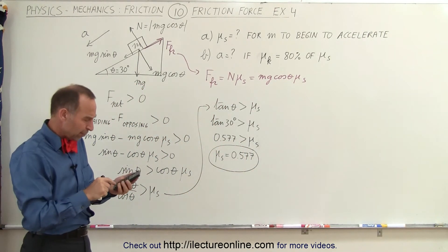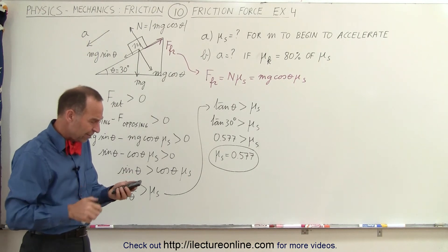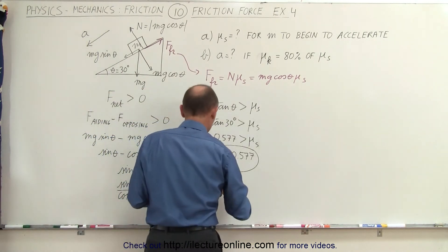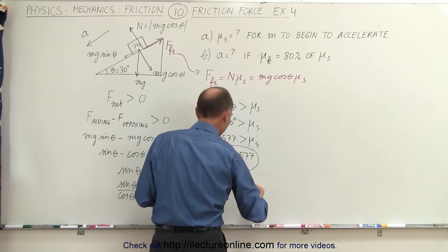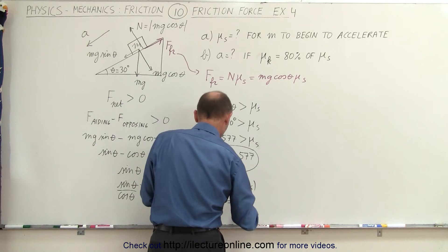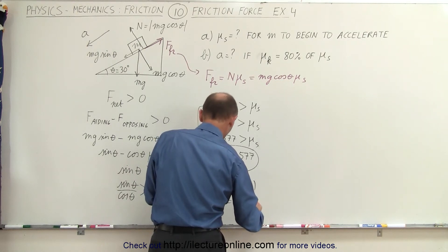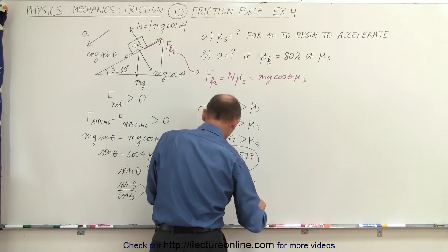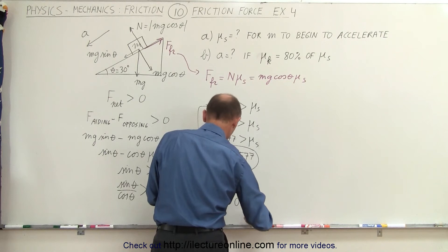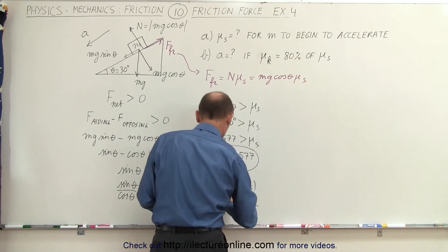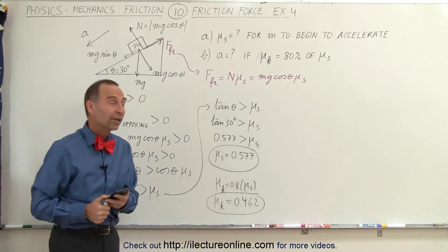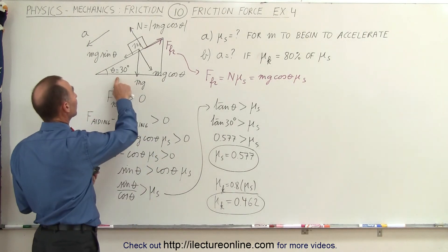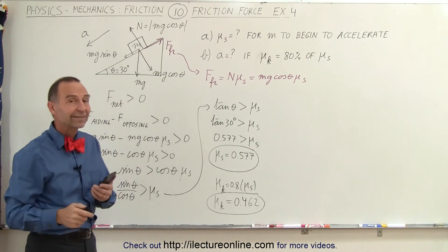Now let's take 80 percent of that. So mu sub k, which is 0.8 times mu sub s, equals 0.8 times 0.577, which gives mu sub k equal to 0.462. The angle is 30 degrees — let's find out what the acceleration will be.